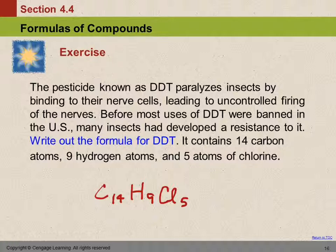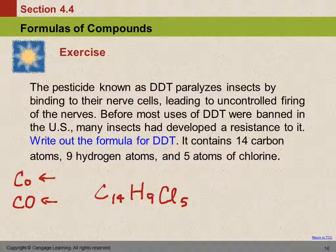When writing chemical formulas, you need to make very clear whether your letters are capital or lowercase, because it makes a difference. CO and Co are two very different things. Co is the element cobalt, which is a metal. CO is carbon monoxide, which is a gas and not something you want to be breathing. So we have to make sure our letters are the right size and indicate capitals.